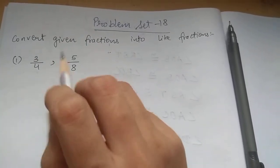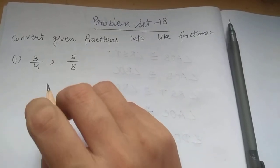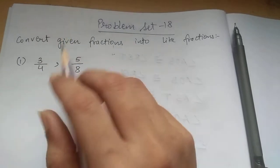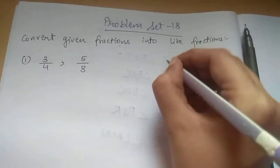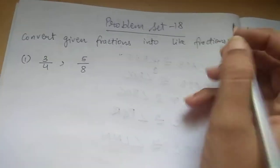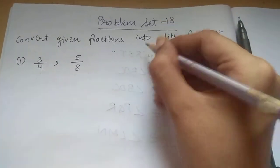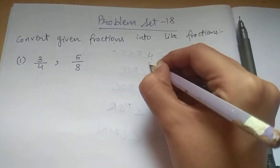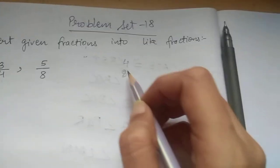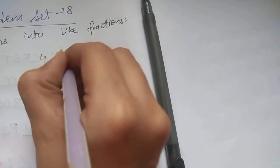Either by multiplying or by dividing. So first of all, your denominator in first fraction is 4 and in second fraction it is 8. So what I have told you is that we have to see the common number which comes in both of their tables.